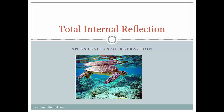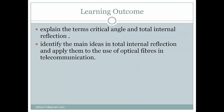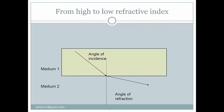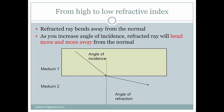Today's lesson will be talking about total internal reflection. When the light ray comes from a high to a low refractive index, you find that the refracted ray bends away from the normal. From the previous lesson, we know that when you increase the angle of incidence, the refracted ray will bend more and more away from the normal.